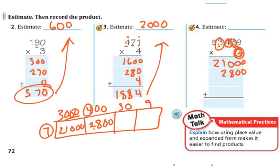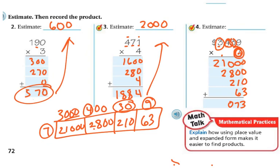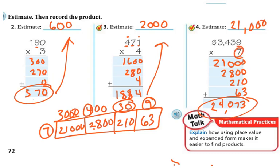Next I have 7 times the 3 in the tens place, so it's 7 times 30. 7 times 3 is 21, I add my 0, so I get 210. And then finally I have 9 times 7, which is 63. Now I'm going to add that all up: 3 plus 0 plus 0 plus 0 is 3; 6 and 1 is 7; 8 and 2 is 10, carry my 1; then I have 2, 3, and 4, and 2. So my answer should be 24,073. My estimate would have been close — 3,439 is closer to 3,000, and 3,000 times 7 is 21,000, because 7 times 3 is 21, and then you just add your three zeros. So it is close and reasonable.